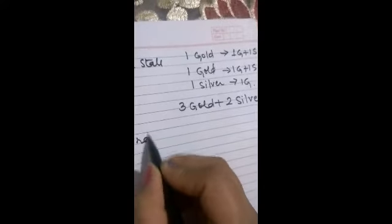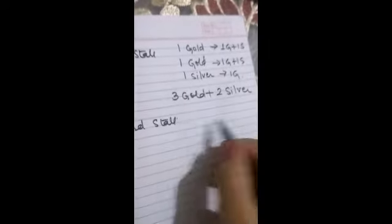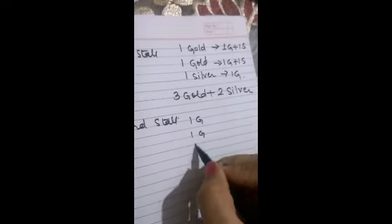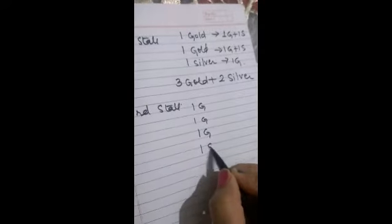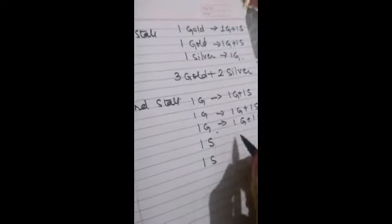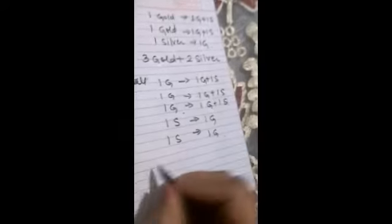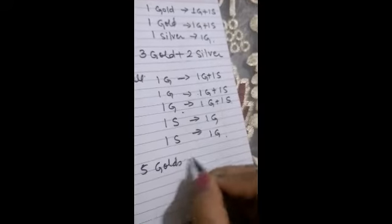Now when she goes to third stall, there since she has in all 5 cards she will play 5 games, 3 with gold and 2 with silver. When she plays with gold she will get 1 gold, 1 silver. 1 gold, 1 silver. 1 gold plus 1 silver. And in place of silver she will get 1 gold each. So total she has 5 golds and 3 silvers. Thus option A is correct, 5 golds, 3 silver.